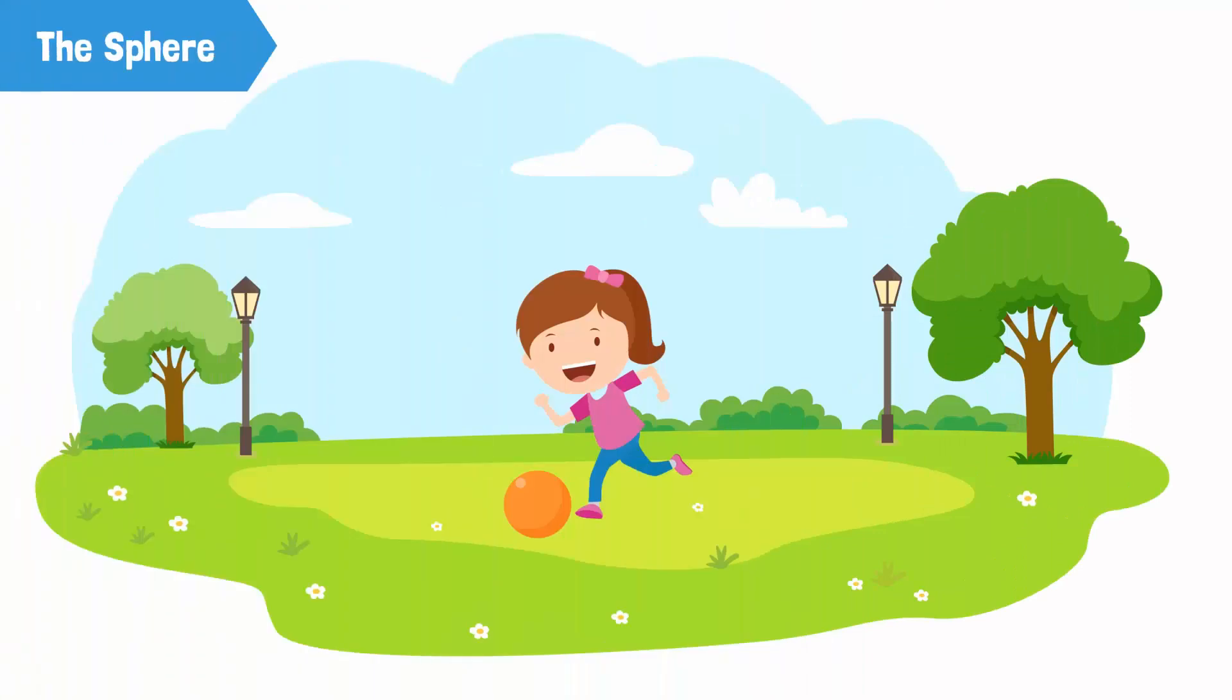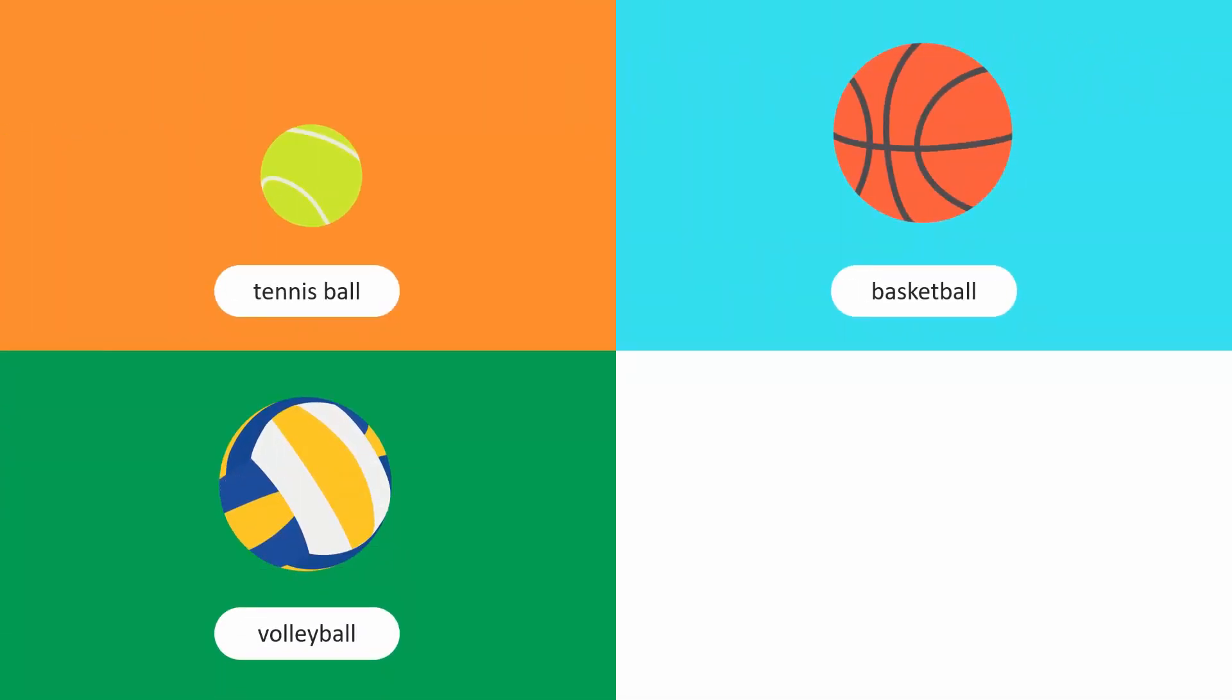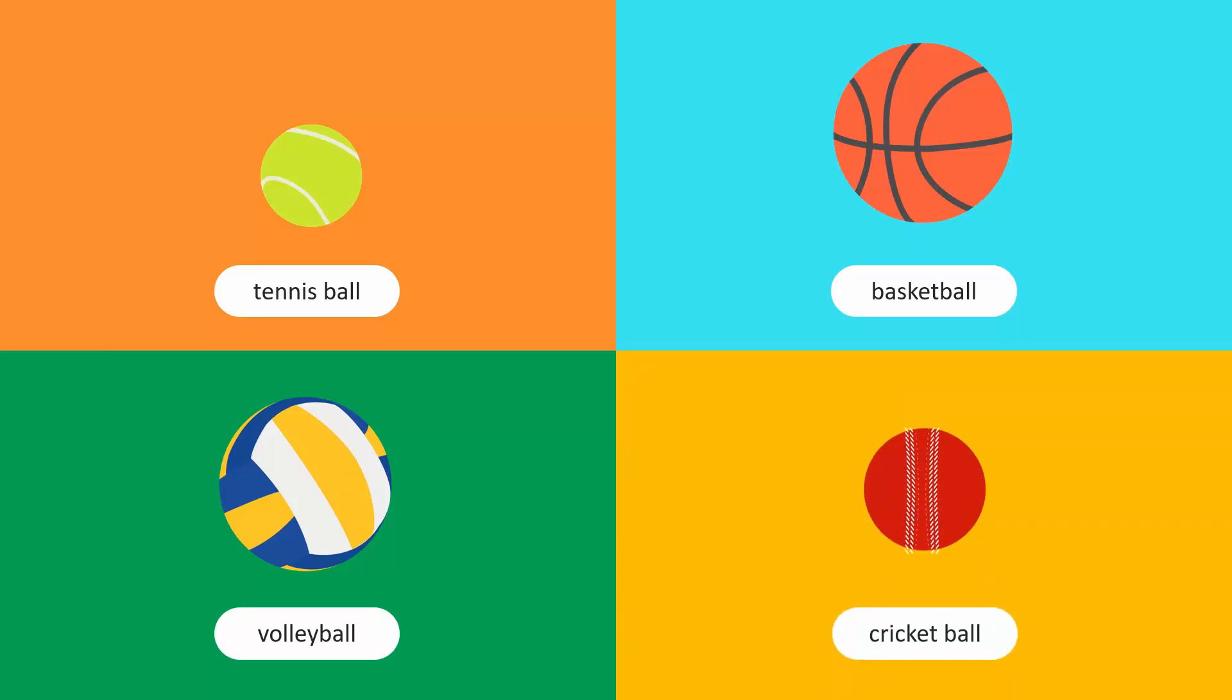If there's one toy that we play with the most, it's the good old ball. Tennis balls, basketballs, volleyballs, cricket balls - these are all examples of what is probably the most popular three-dimensional figure.